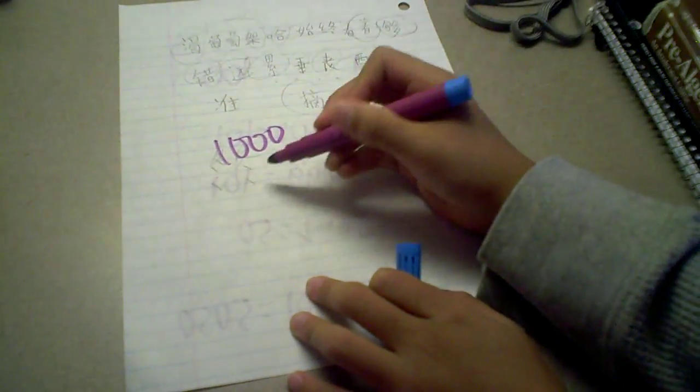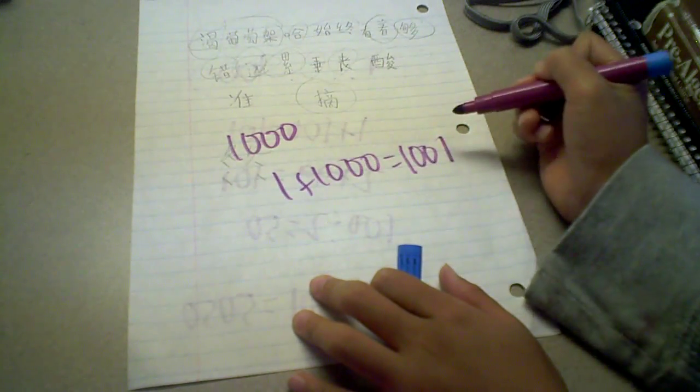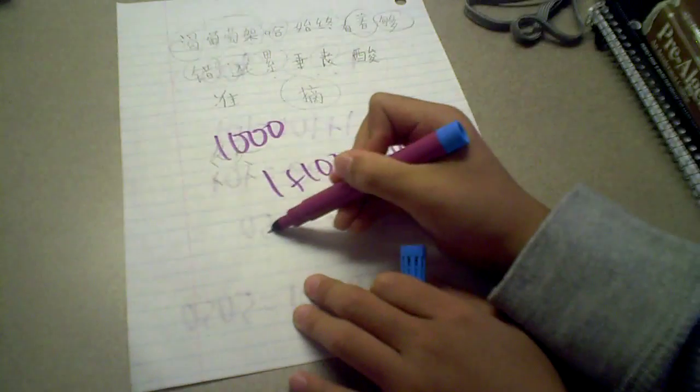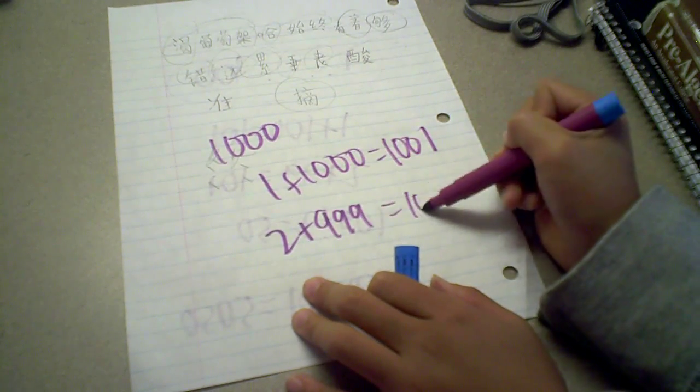Then the first number plus the last number equals 1,001, right? The second number plus the second-to-last still equals 1,001.